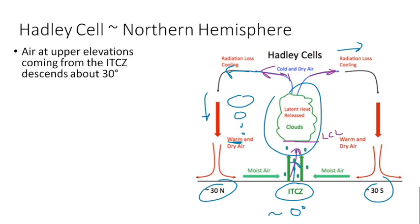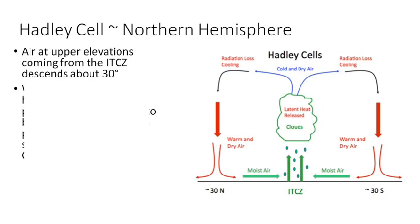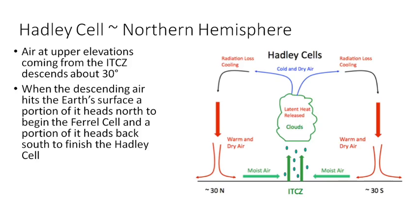So instead of cooling, it warms. So here, actually, oftentimes is where we find our deserts. Around here, about 30 degrees, where the Hadley cell has this leg of descending air. That leg of descending air, then, will go both directions. When it splats to the Earth's surface, part of it will go this way, back towards the intertropical convergence zone, or the equator, to finish the Hadley cell. These are Hadley cells.